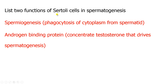Two functions of Sertoli cells in spermatogenesis: first, during spermiogenesis, Sertoli cells phagocytose excess cytoplasm from the spermatid. Second, they produce androgen binding protein under the influence of FSH (follicle stimulating hormone). FSH stimulates Sertoli cells to form androgen binding protein, which helps concentrate testosterone to drive spermatogenesis. Testosterone levels within the testes after puberty rise to about 20 times the levels found in normal plasma, and this high concentration is what drives spermatogenesis.